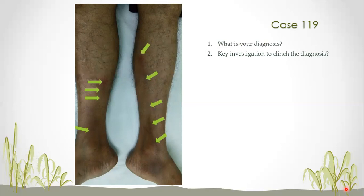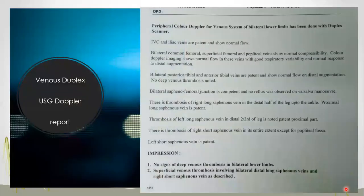A few doctors said this is migratory superficial thrombophlebitis, which was close to the answer, but it is not migratory because this was only one lesion and did not appear at other places, and the history did not suggest any migration. So the diagnosis was superficial venous thrombosis. Some literature also includes this entity under superficial venous thrombophlebitis — it's a similar term — but we prefer to call it superficial venous thrombosis.